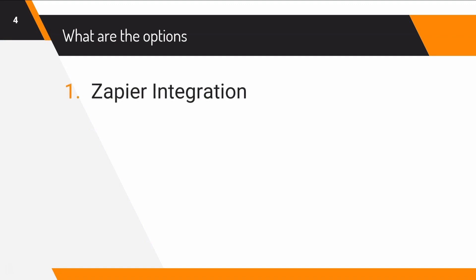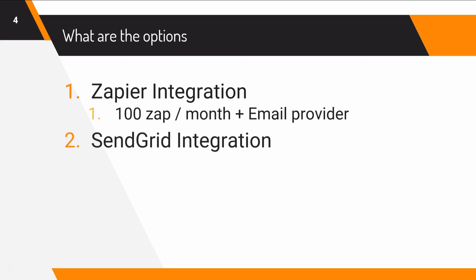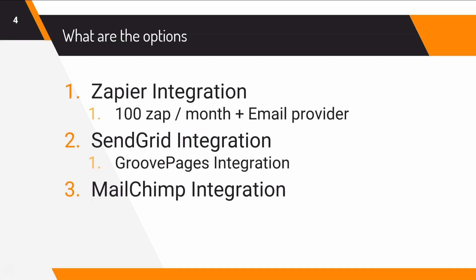So what are our options when looking to connect our GroovePages site with our inbox? We can use the Zapier integration — with that you have 100 zaps per month and you need an email provider like Gmail. I already made a video on this, which you can see in the card above or the link in the description. We can also use the SendGrid integration — since GroovePages has an integration with SendGrid, we can connect both systems and use SendGrid as a relay to send emails from our contact form. I also have a video on that.